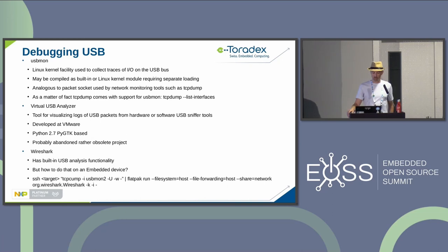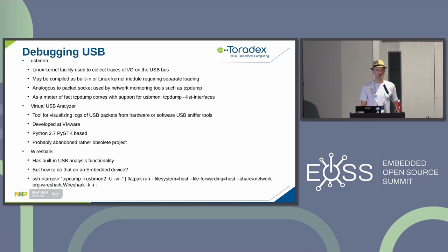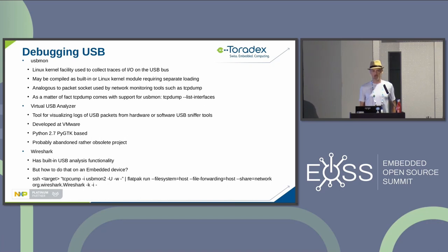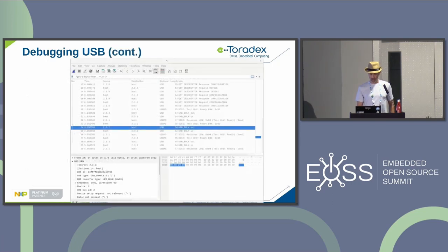For USB debugging on Linux, there is USBMon — a kernel facility that allows collecting traces of IO on the USB bus. To visualize the data, you can use Wireshark (the virtual USB analyzer project is unfortunately abandoned/obsolete). On an embedded device, you don't want to run Wireshark locally. Instead, SSH in and use tcpdump, which has functionality to trace USBMon data, piping standard out to standard in on a host running Wireshark, which will then display the traffic.